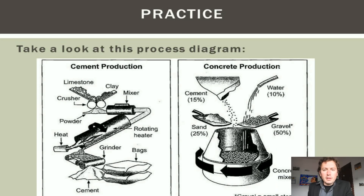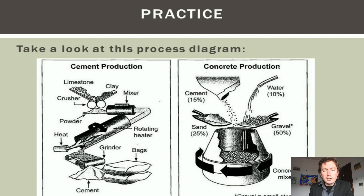Let's take a look at this process diagram. On the surface it looks a little difficult to describe, but if you spend a couple of minutes looking at it you'll find it's actually quite easy. There are two parts — we can describe one part and then the other, giving each its own separate paragraph. The diagram on the left shows cement production, which clearly happens first because we need cement to make concrete. The order of events goes from top to bottom in both cases.